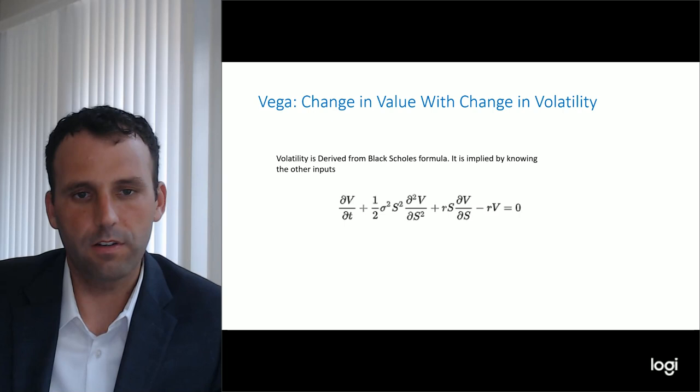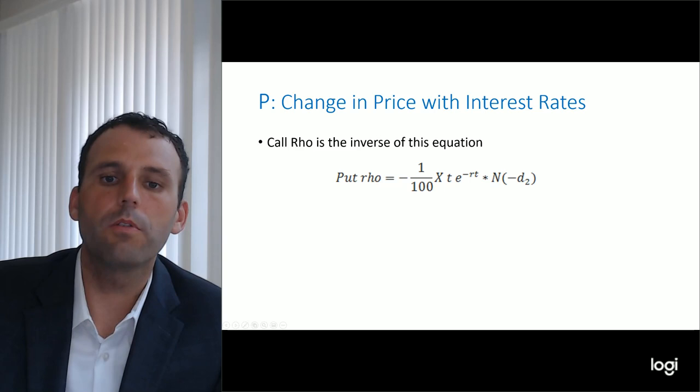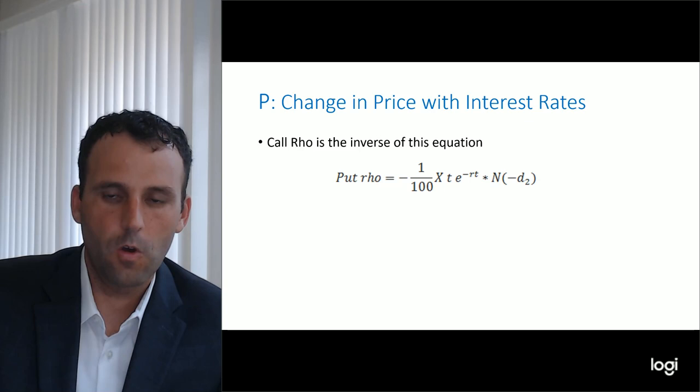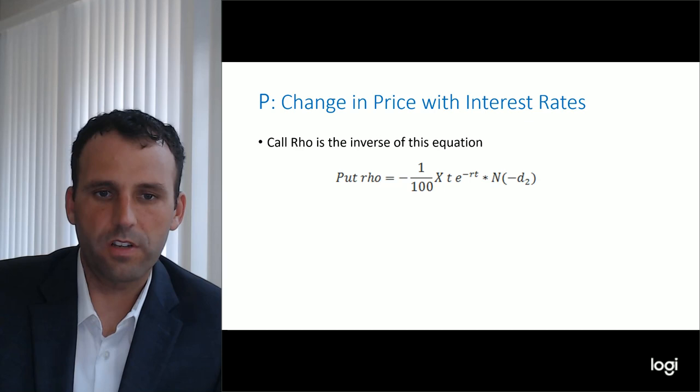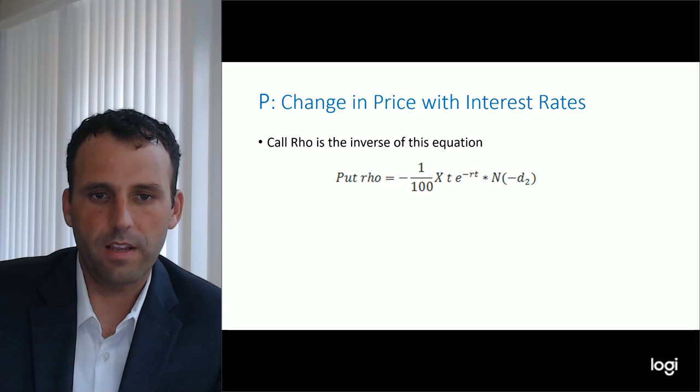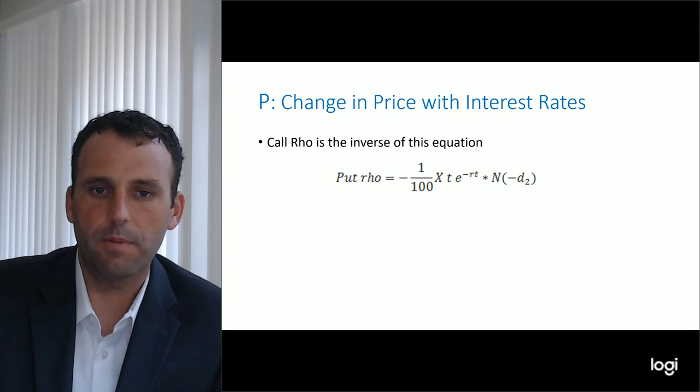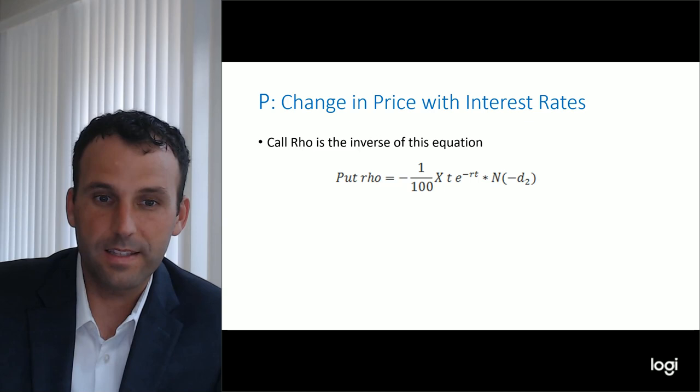The next thing we're going to talk about is Rho — even though its Greek symbol is kind of like a capital P — which is the change in price with interest rates. Basically there is a cost to capital, and so at higher interest rates the price of a put tends to go down and the price of a call goes up because you don't have to hold that cash. Especially with interest rates as low as they are, it doesn't have as big of an impact as some of the other Greeks.